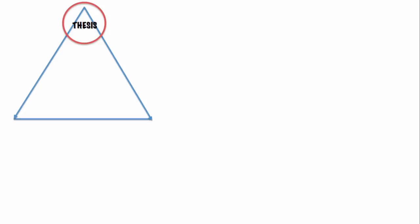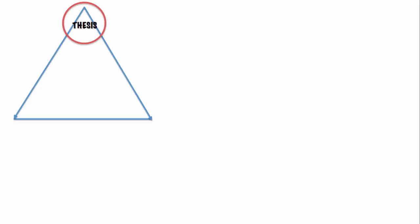Now that we've figured it out, let's think through the parts and write our concluding paragraph. In the introduction, my thesis statement was: "Through the symbol of the flowers, Walker reveals that once a child has witnessed cruelty and hatred, innocence is forever lost." And I need to restate this in fresh words. So here we go: "By depicting Myop's evolving relationship with the flowers, Walker underscores how experiencing the viciousness of the adult world signals the end of childhood."